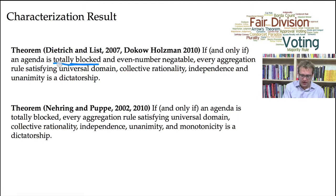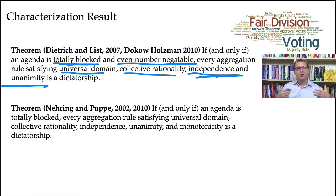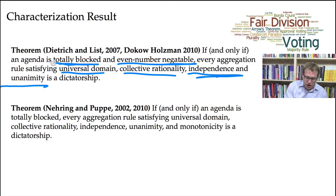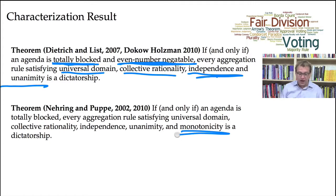Using this notion, if an agenda is totally blocked and even-number negatable, then every aggregation rule satisfying universal domain, collective rationality, independence, and unanimity is a dictatorship. The relation to the previous theorems is that we dropped the stronger systematicity assumption — which combined both neutrality and independence — replacing it with just independence. But to compensate, we need the stronger agenda richness condition of being totally blocked. And again, we can drop even-number negatability and replace it with monotonicity: if an agenda is totally blocked, every aggregation rule satisfying universal domain, collective rationality, independence, unanimity, and monotonicity must be a dictatorship.